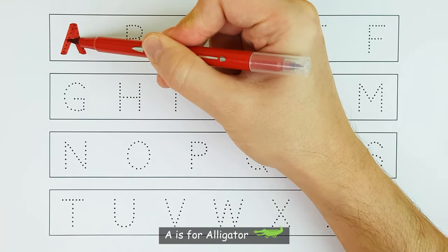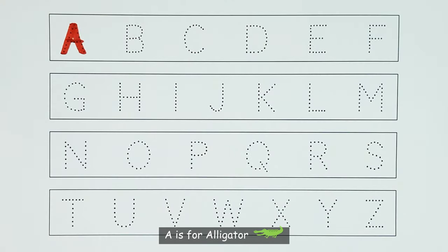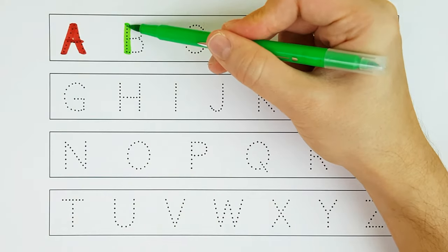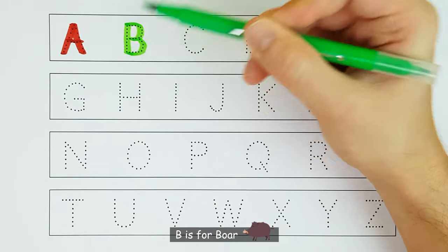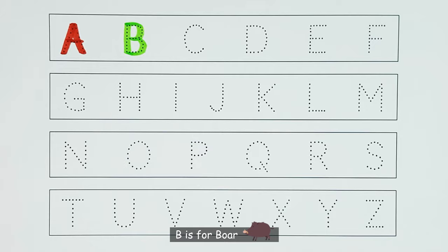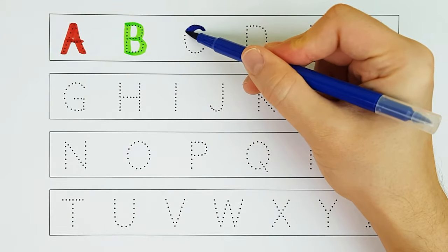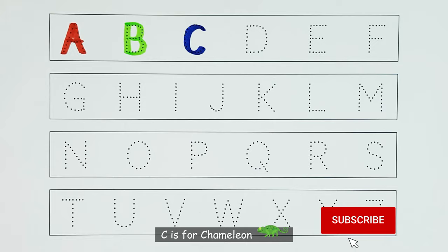A. A is for alligator. A. B. B is for boar. B. C. C is for chameleon. C.